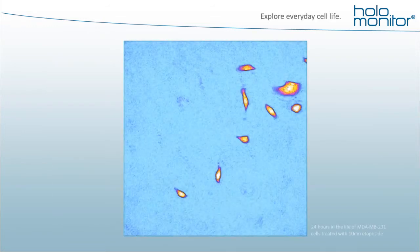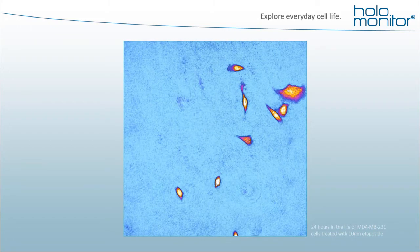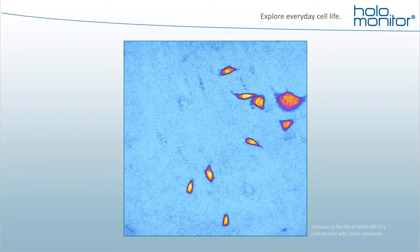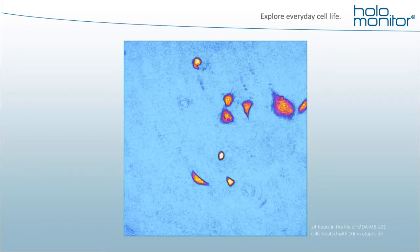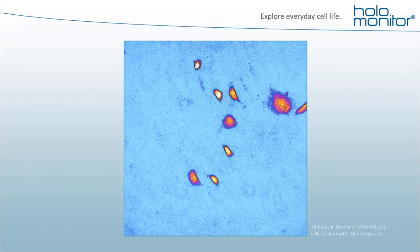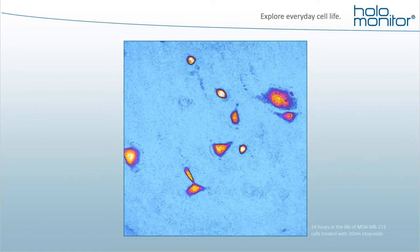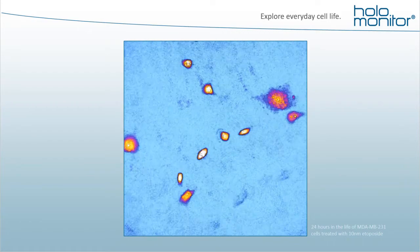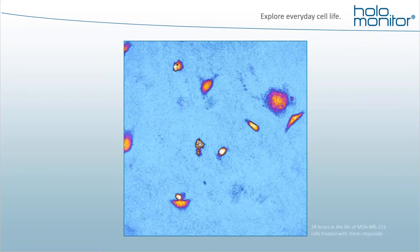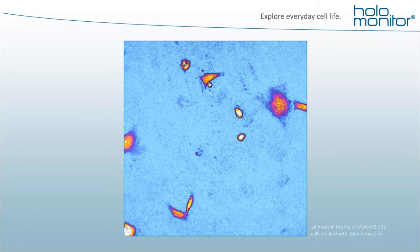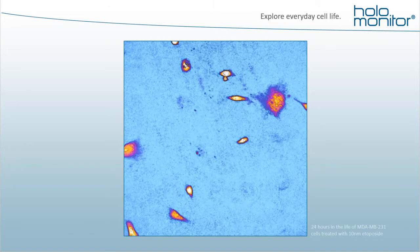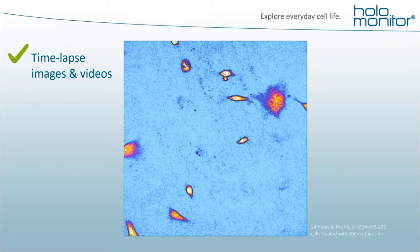This is a Holomonitor time-lapse video. We are able to follow everyday cell life events, such as growth, morphology changes, cell migration, or cell death. Keep an eye on the larger cell in the middle, which we are just watching undergoing apoptosis. Besides beautiful 3D images and videos of your cells, Holomonitor lets you collect real-time quantitative data on your cell behavior.